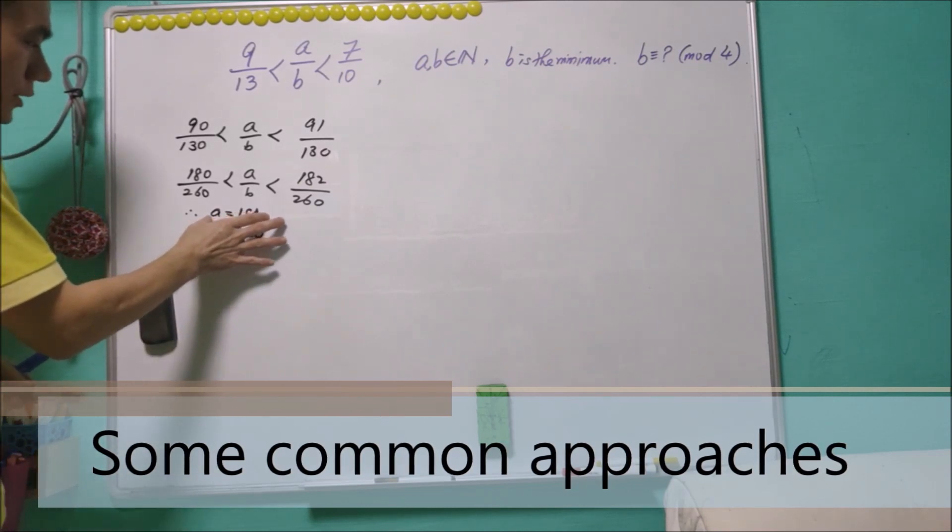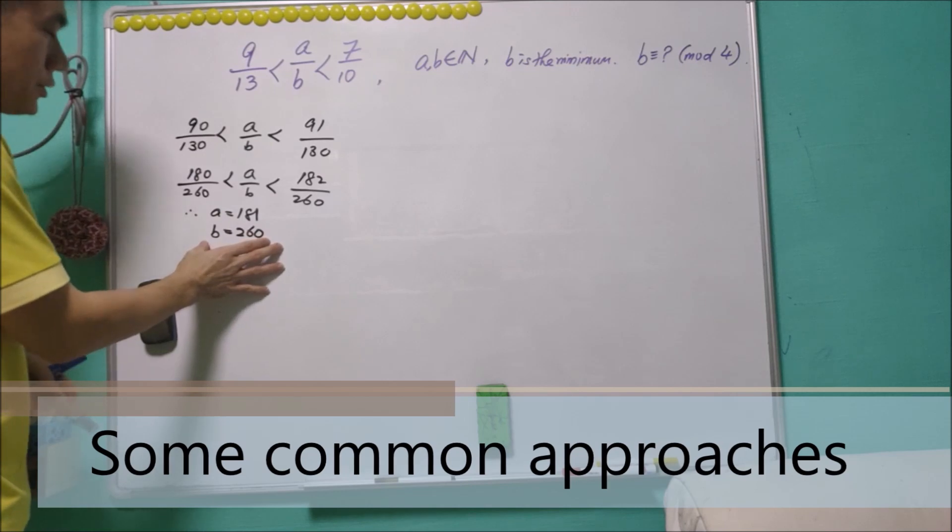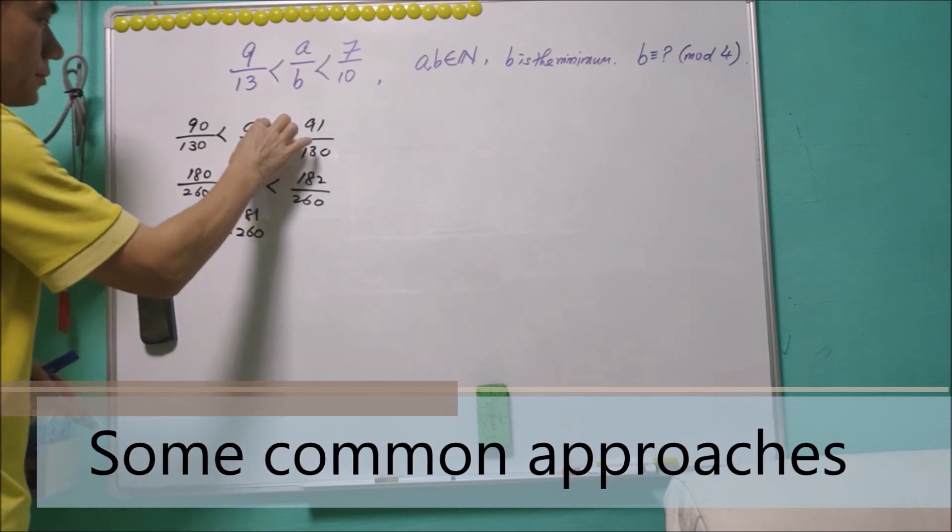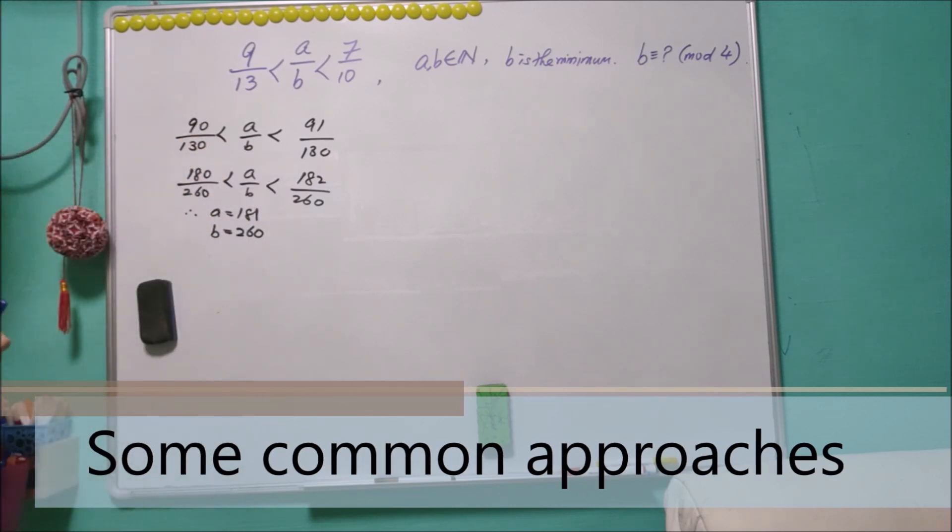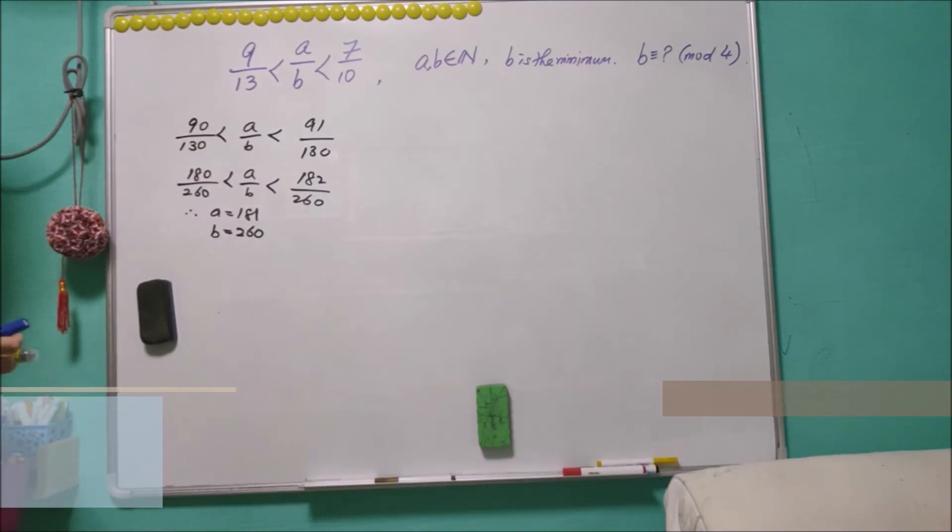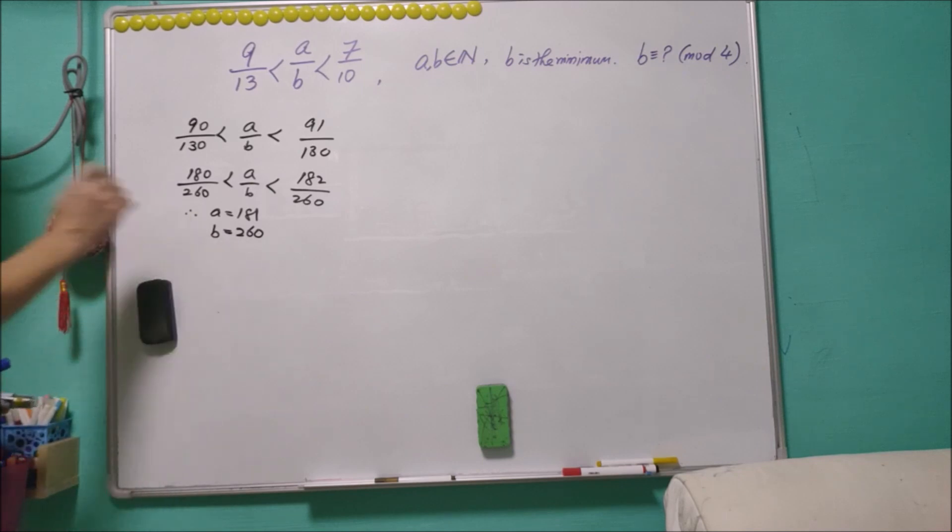However, in this case b is not minimum. In fact, b can be a lot more smaller than 260. I'm going to provide a few methods to get the value of b.